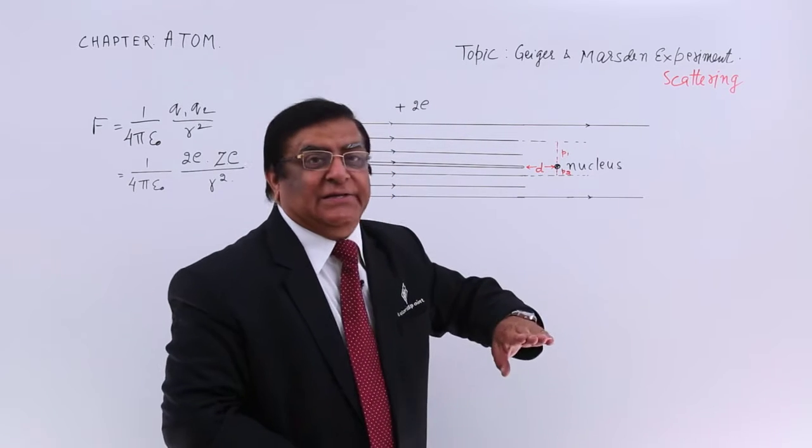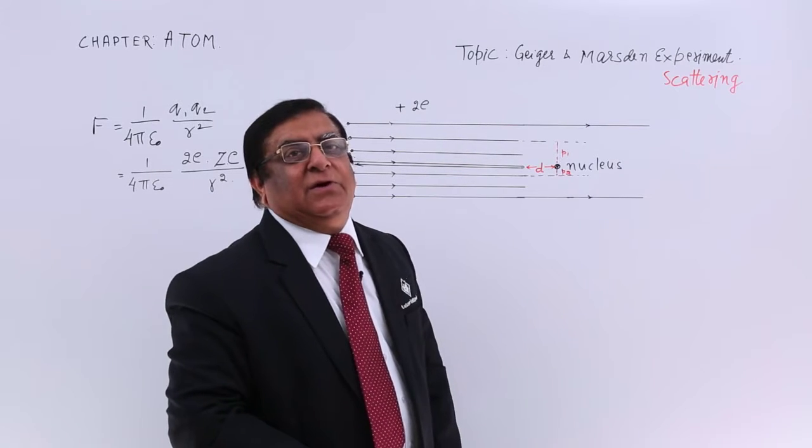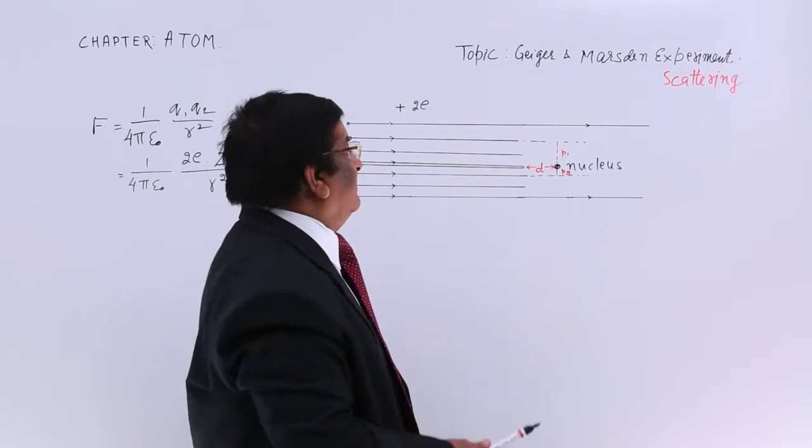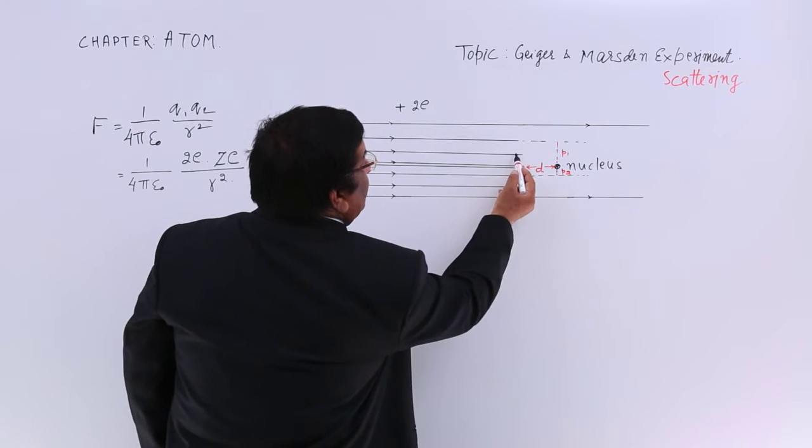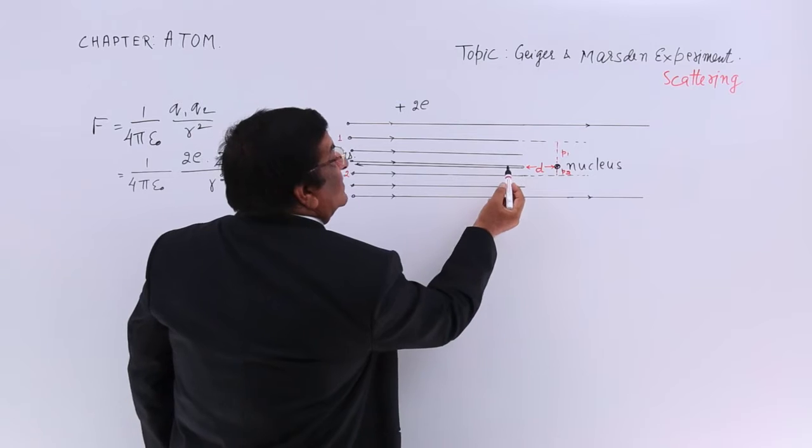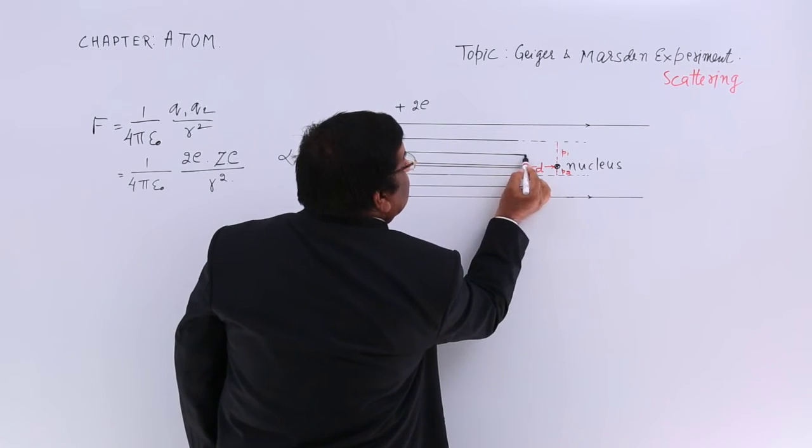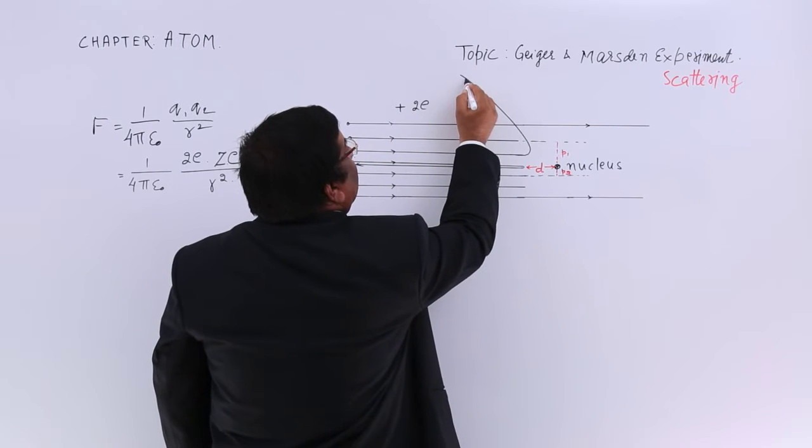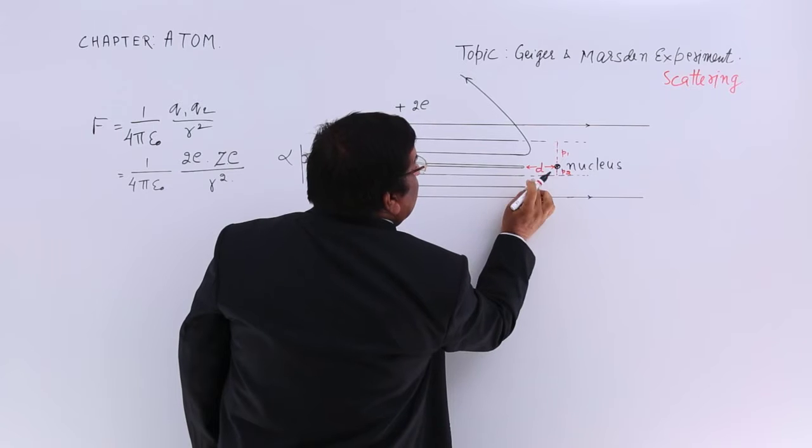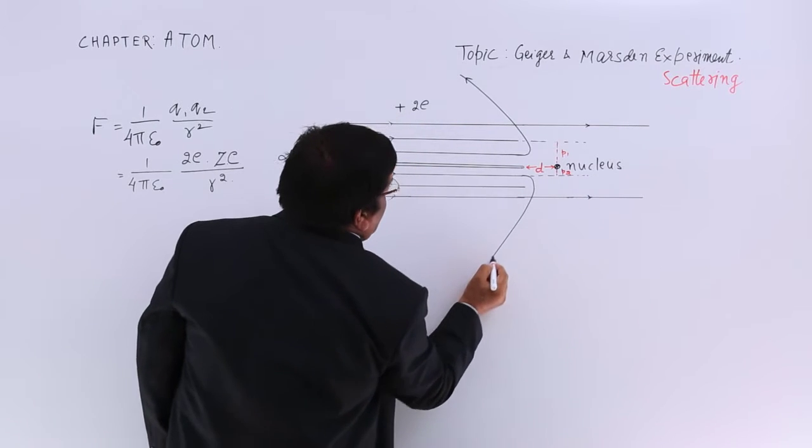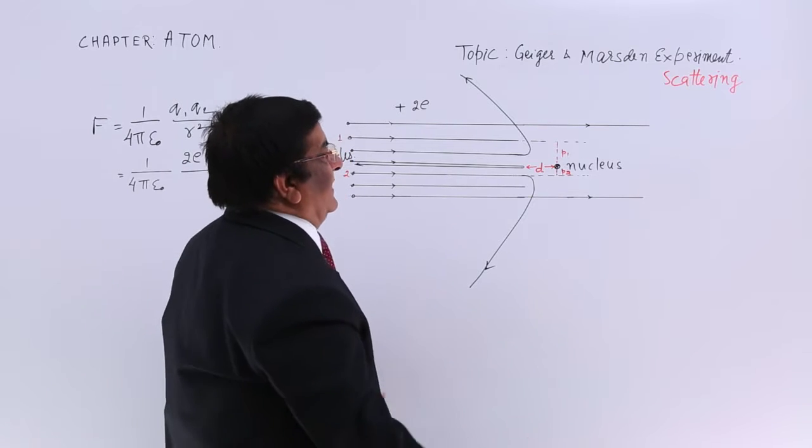So, farther it is, the distance is more and the force will be less. On which one the force will be maximum, the one which is coming in its line. Here the force is slightly less but sufficient to reflect it back. So, this will go like this and it gets reflected. Similarly this goes like this and gets reflected, more than 90 degrees.